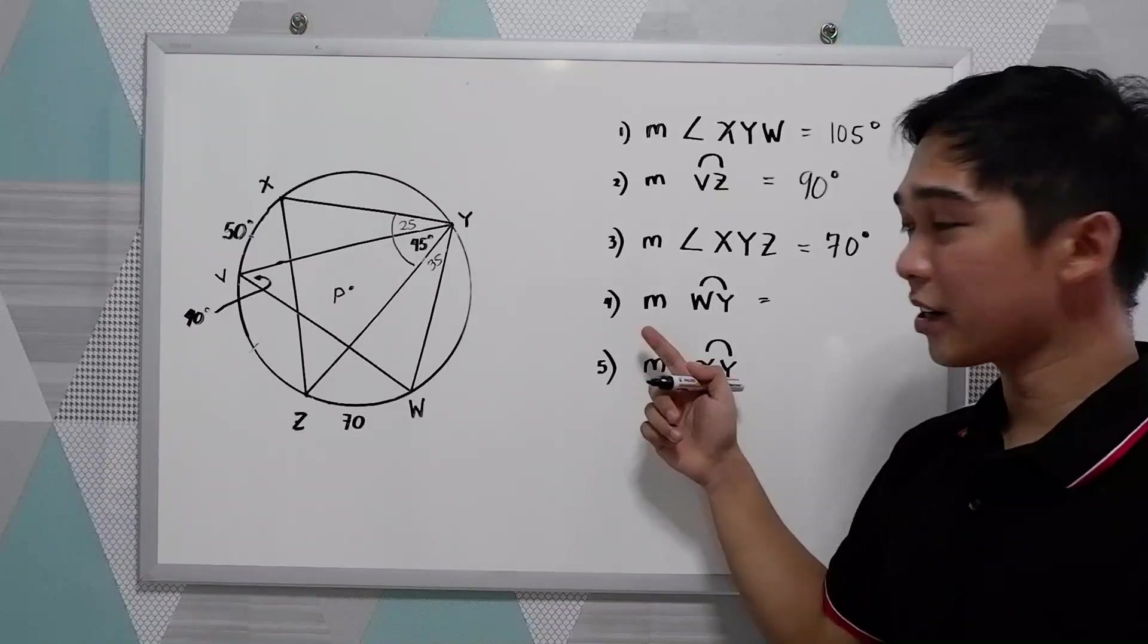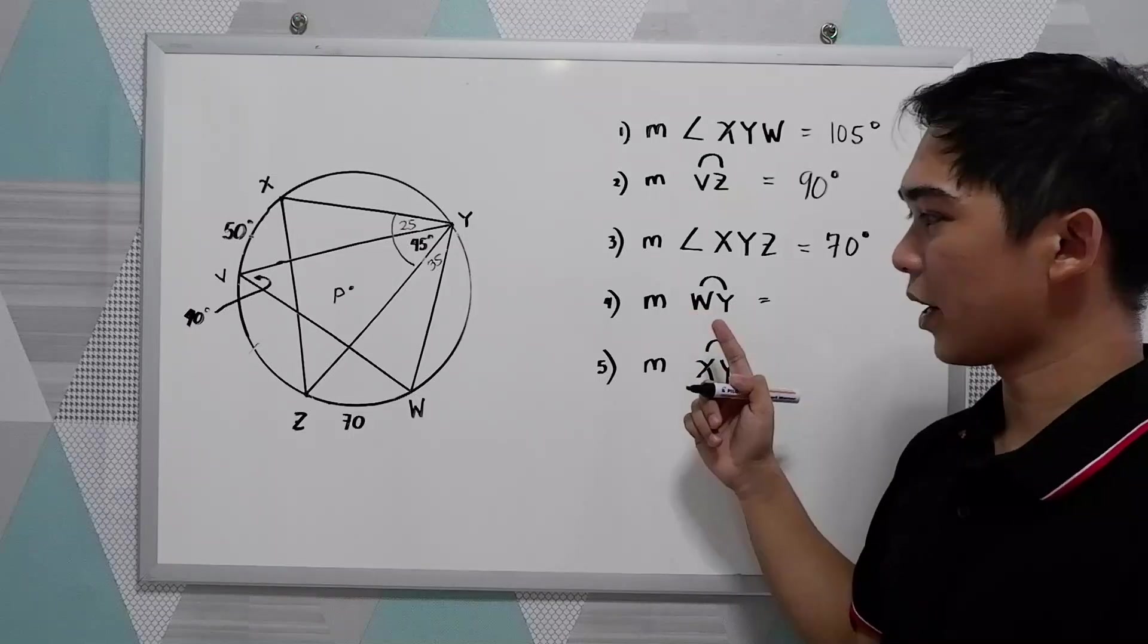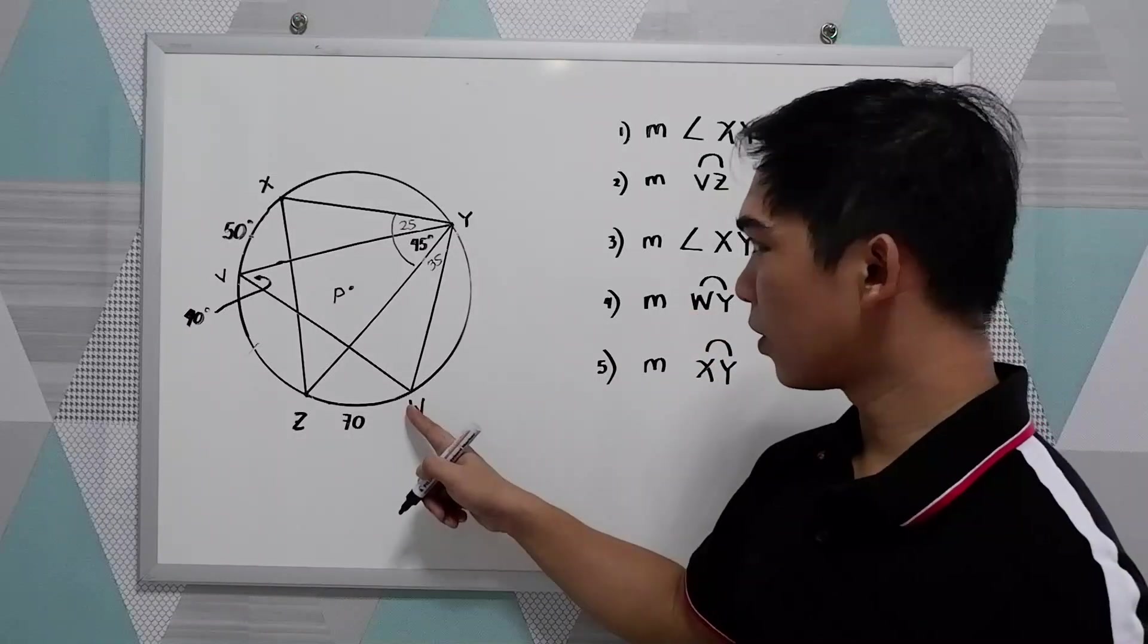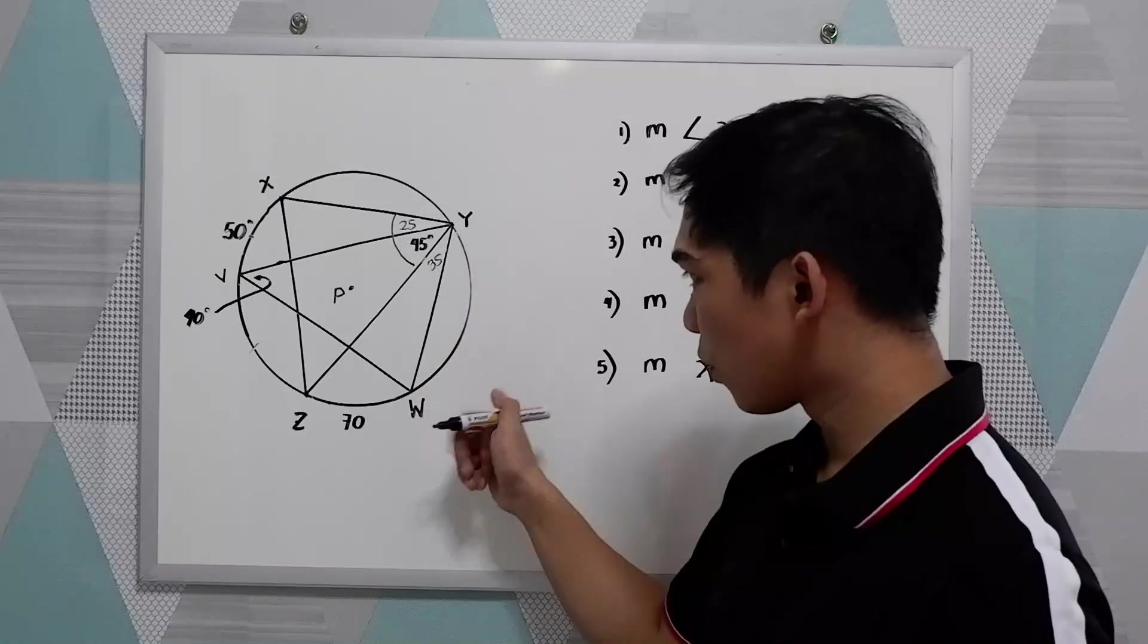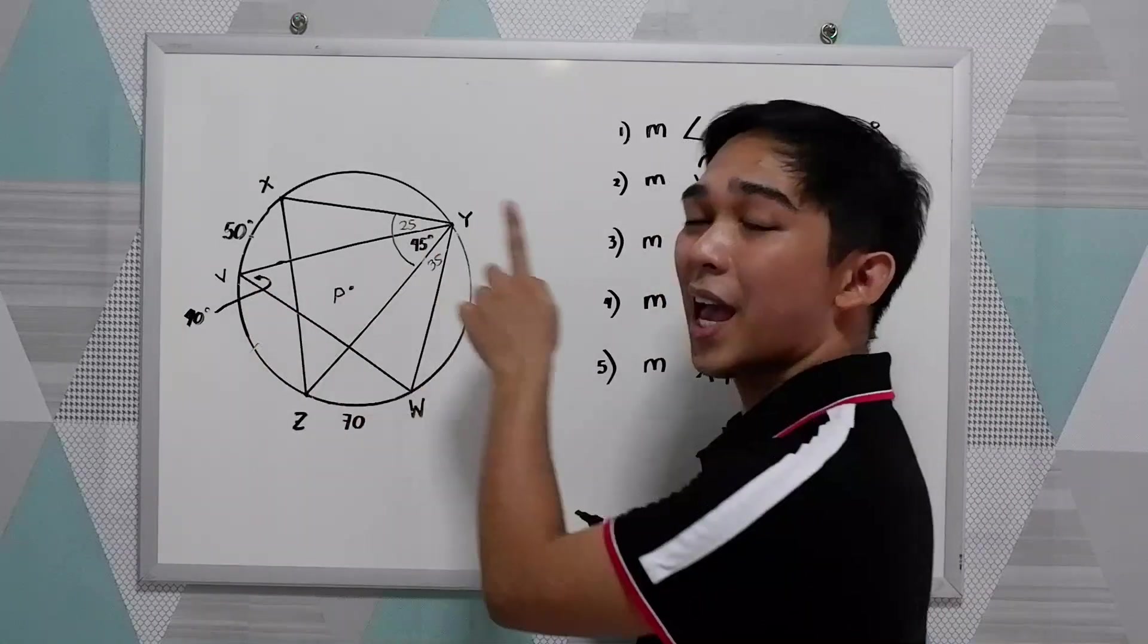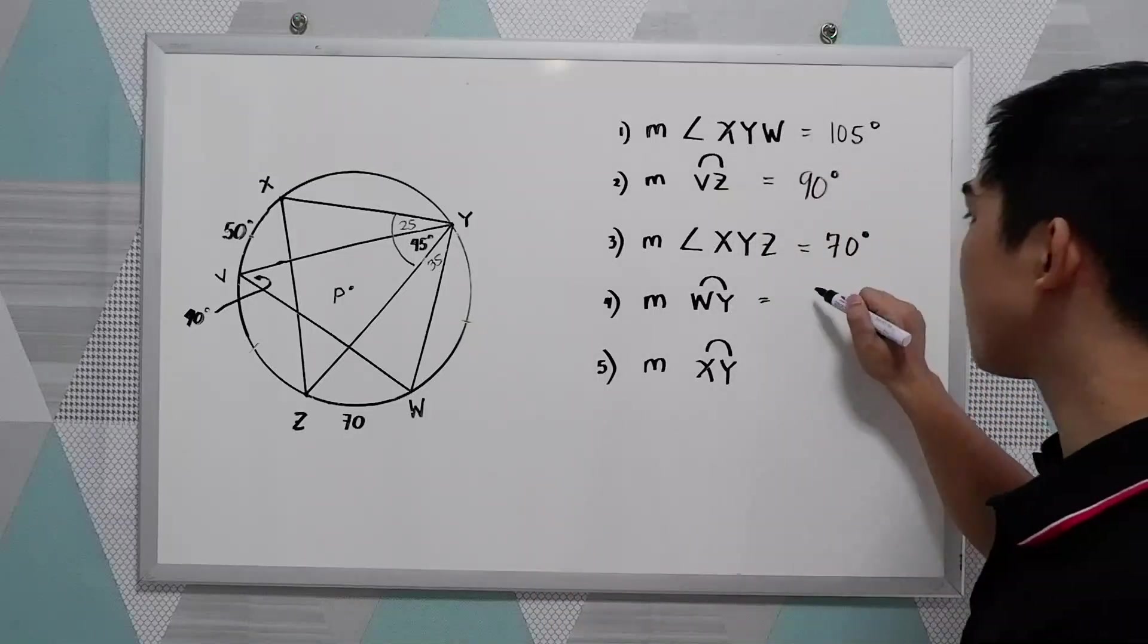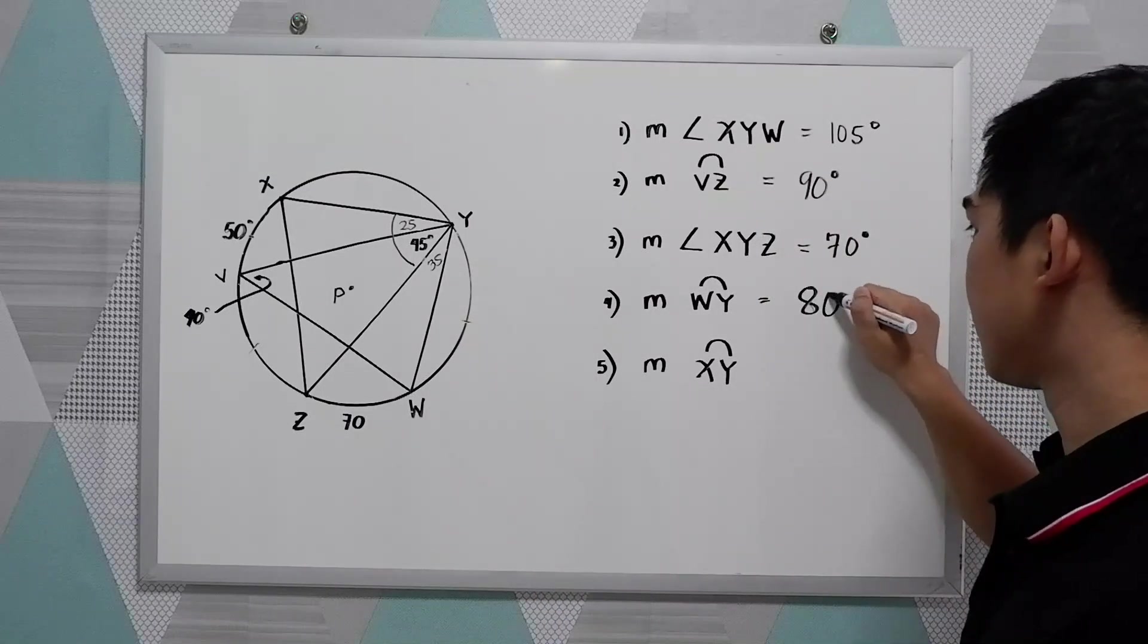And number 4. Measure of the arc W-Y. We have a given 40, so times 2, 40 times 2, 80 degrees.